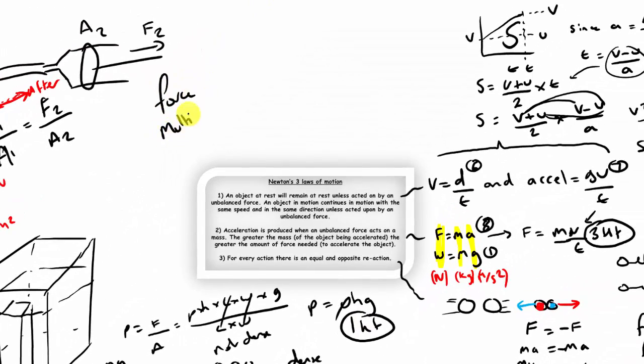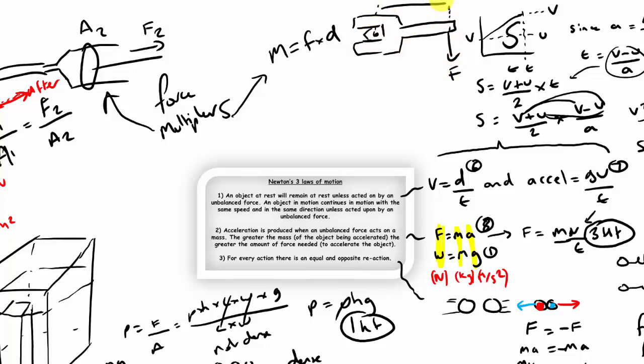Now human beings are pretty weak animals, and we find it very useful to create machines that can multiply the force that we are able to generate. Hydraulic machines do this, and so do levers. So a great example of a lever is a spanner. The longer you make the lever arm, the more you multiply the turning effect you're able to produce.